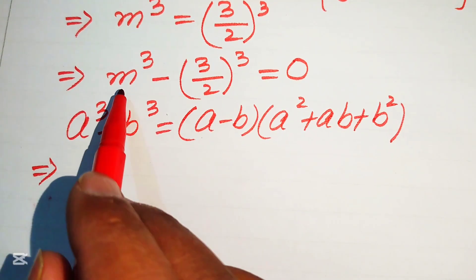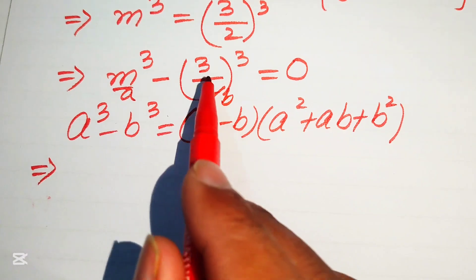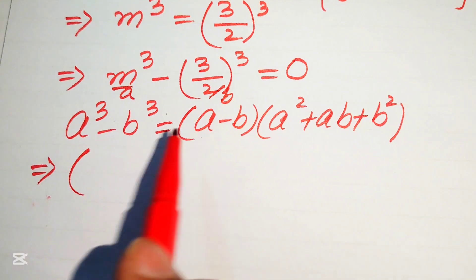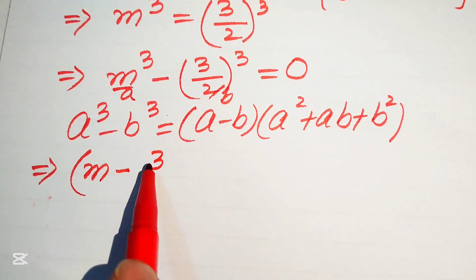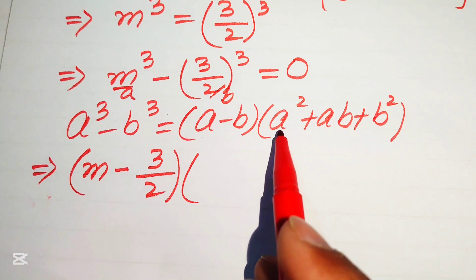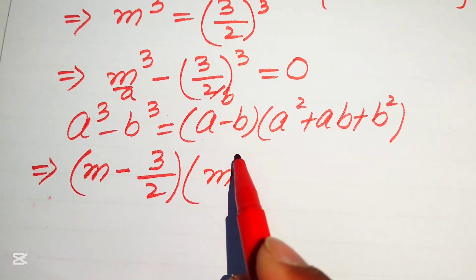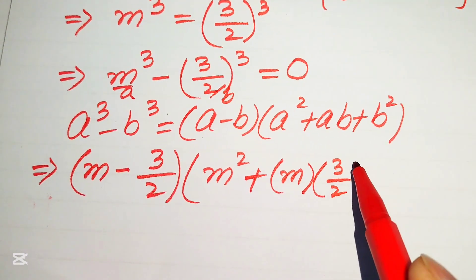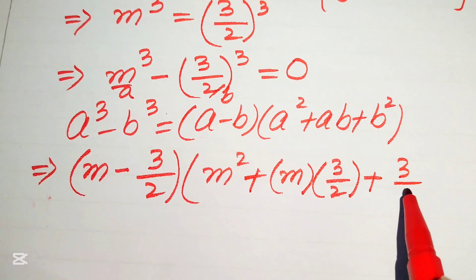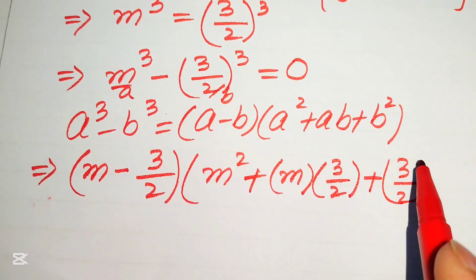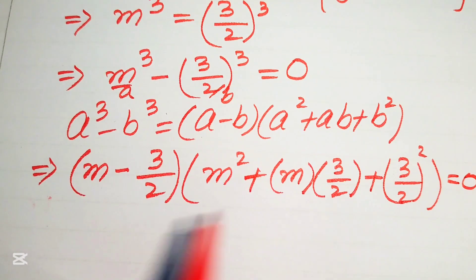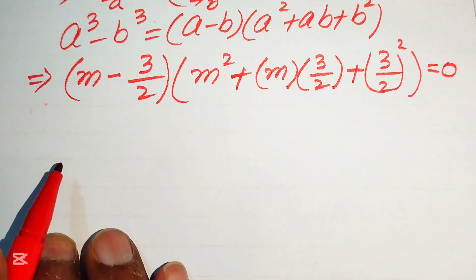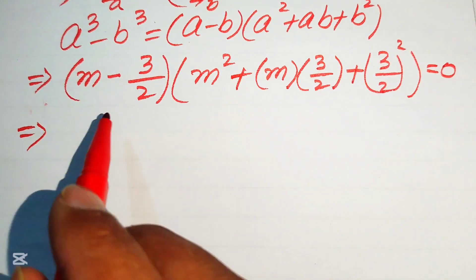Here a = m and b = 3/2. Applying the formula, we write the equation as (m − 3/2) times (m² + m·(3/2) + (3/2)²) = 0. So we expand to get (m − 3/2)(m² + (3/2)m + 9/4) = 0.